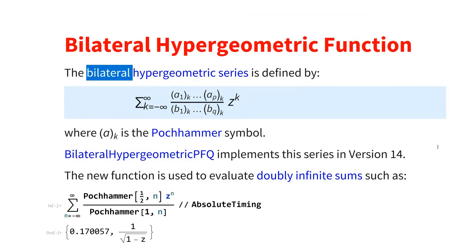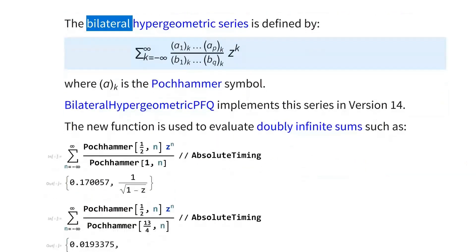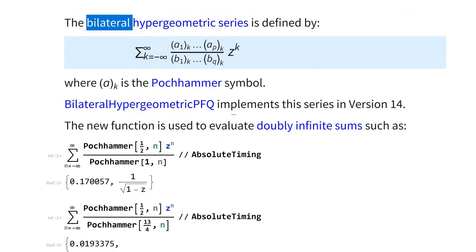So this bilateral function, BilateralHypergeometricPFQ, is a series, but of course you can evaluate by various tricks, like analytic extension, et cetera, and Borel summation in the more general case.